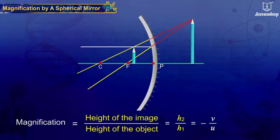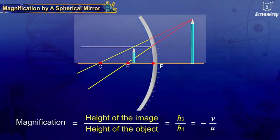As the object is usually placed above the principal axis, H1 is taken as positive.